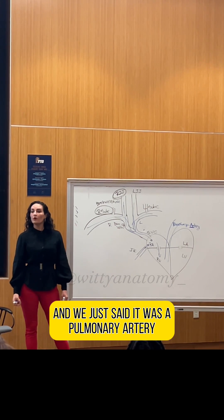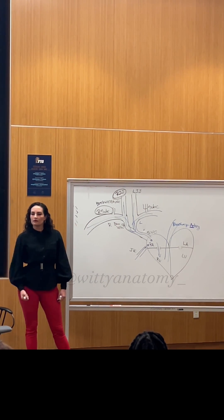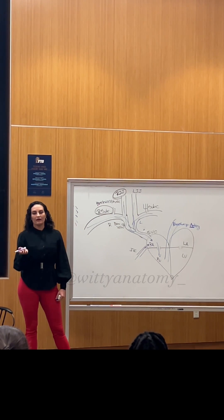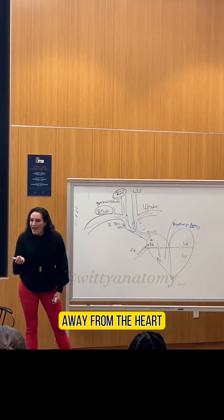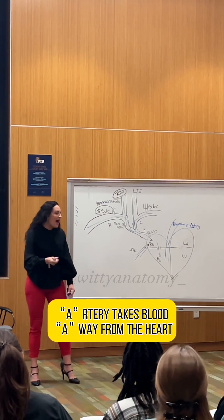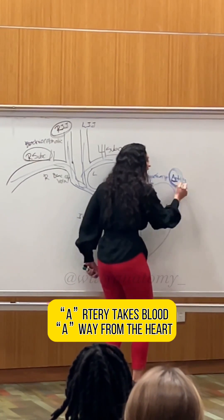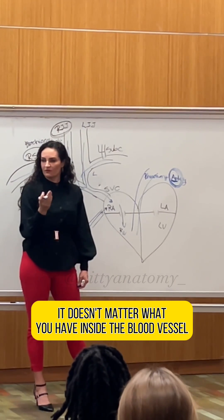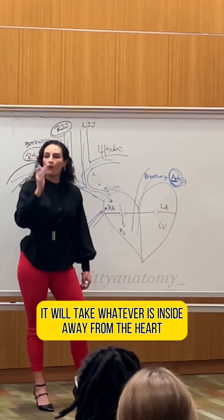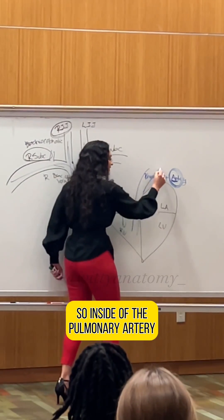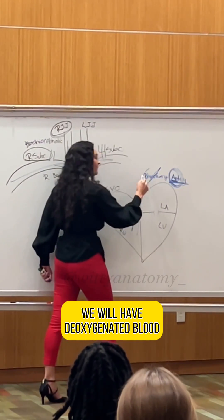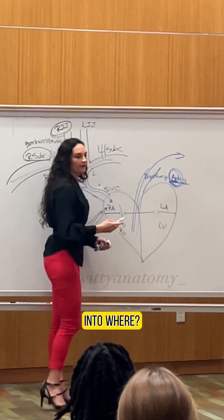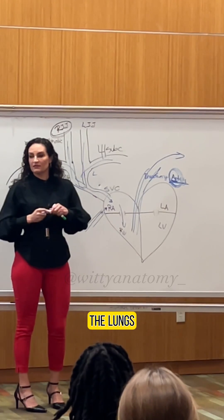We just said there was a pulmonary artery — how can that happen? What is the definition of an artery? An artery is a blood vessel that takes blood away from the heart. It doesn't matter what you have inside the blood vessel; it will take whatever is inside away from the heart. So inside the pulmonary artery we have deoxygenated blood going away from the heart, into the lungs.